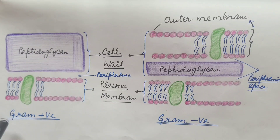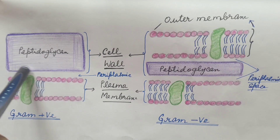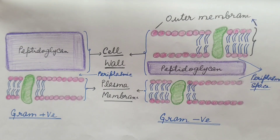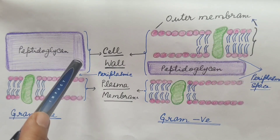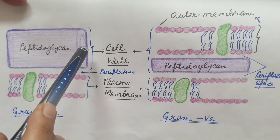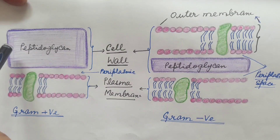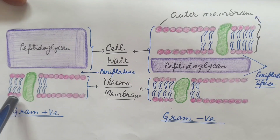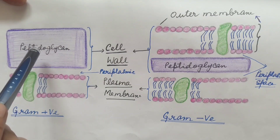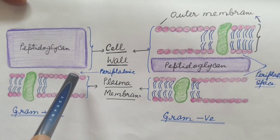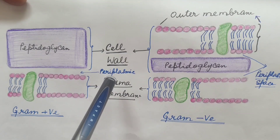Now let us understand the cell wall structure of gram positive and gram negative bacteria with the help of a diagram. In gram positive bacteria, the cell wall is made up of a thick layer of peptidoglycan. In some gram positive bacteria, teichoic acid is also present, covalently attached to the peptidoglycan layer. Below this is the plasma membrane of the gram positive bacterial cells. The space between the peptidoglycan layer and the plasma membrane is known as periplasmic space.